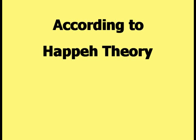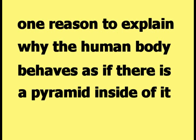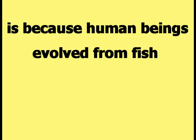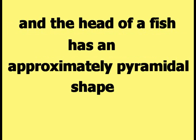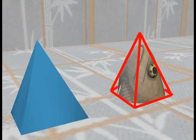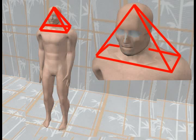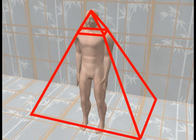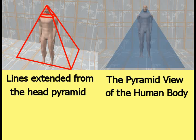According to happy theory, one reason to explain why the human body behaves as if there is a pyramid inside of it is because human beings evolved from fish and the head of a fish has an approximately pyramidal shape. The pyramidal shape of the head of a fish can be found in the shoulders and head of the human body. Extending the lines of the pyramid on the head from the shoulders down to the ground creates the pyramid view of the human body.